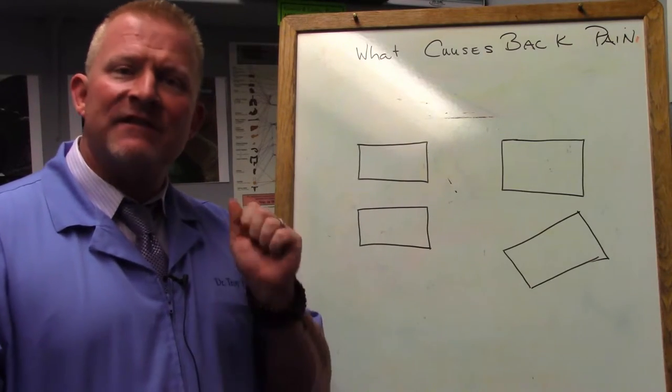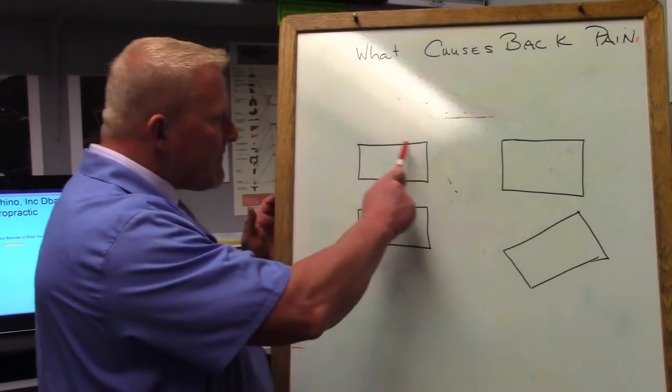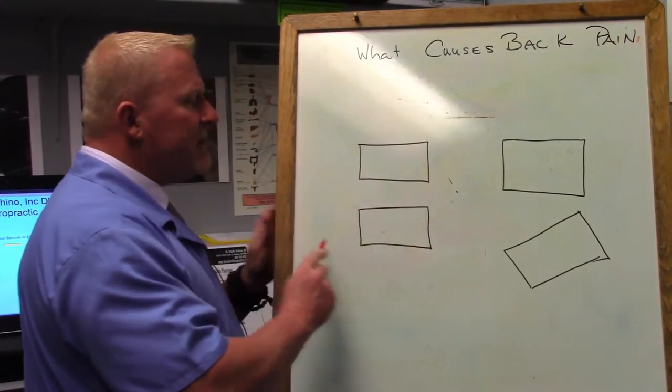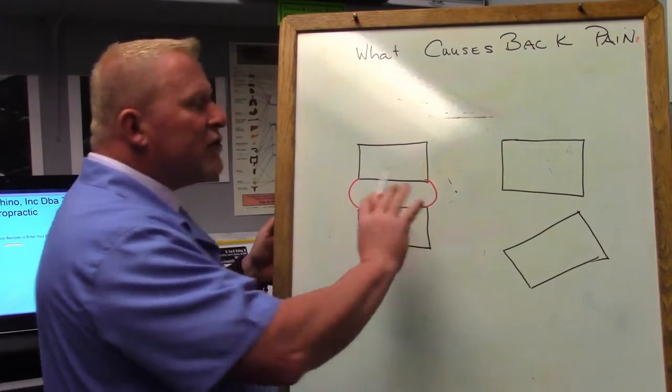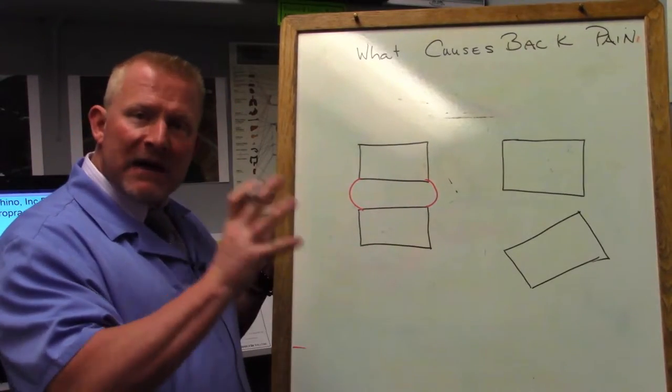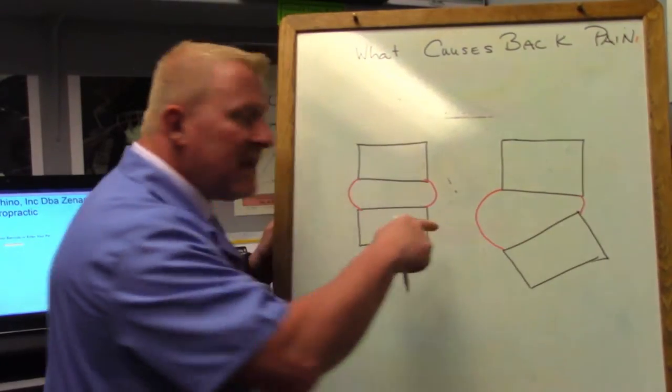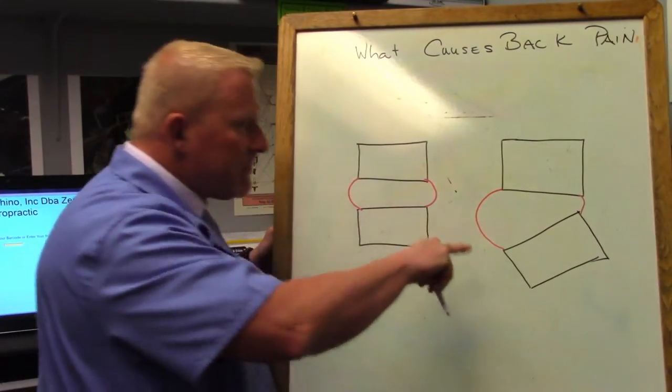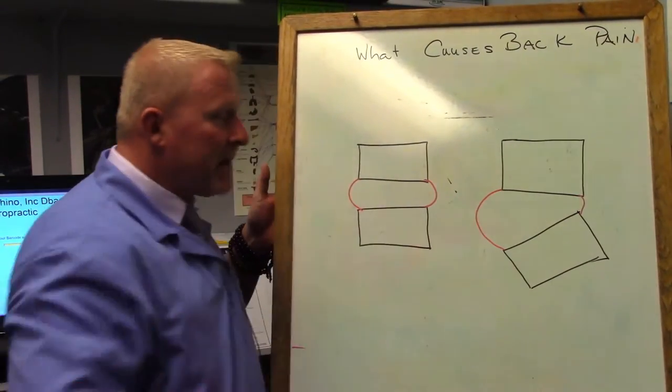So if we look at the vertebra, these being the vertebra of the spine, here's the disc. If the joints get out of alignment, the spinal joints get out of alignment, which way is the disc gonna go? Is the disc misalignment or bulge here a result of the misalignment, or did that cause the misalignment?